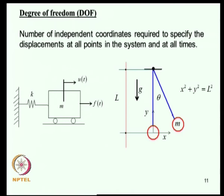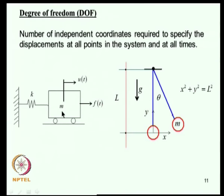The degree of freedom is the number of independent coordinates required to specify displacement at all points in the system at all times. For example, a point mass connected to a support through a spring oscillating in a plane has only one degree of freedom U - at any time T, knowing U tells us where the mass is. This mass has no dimension and the spring has no length; they are idealizations.